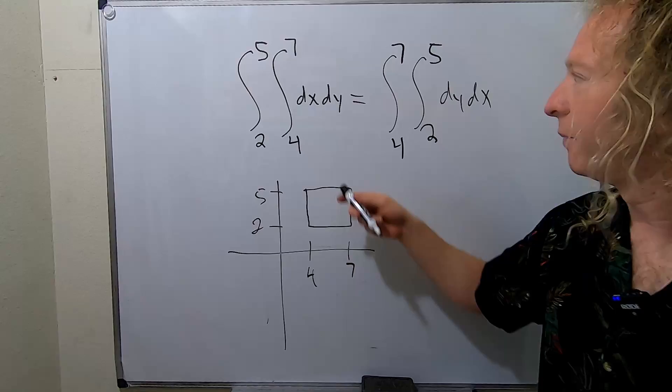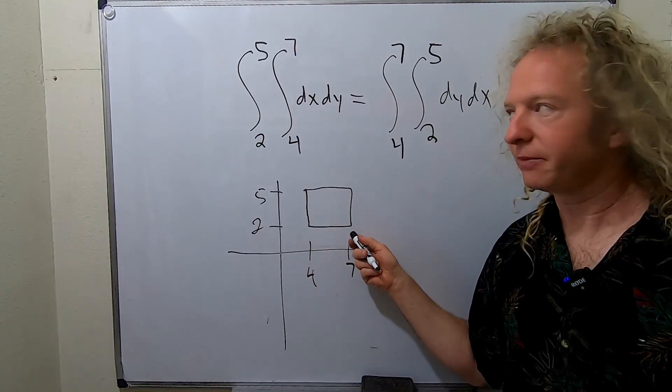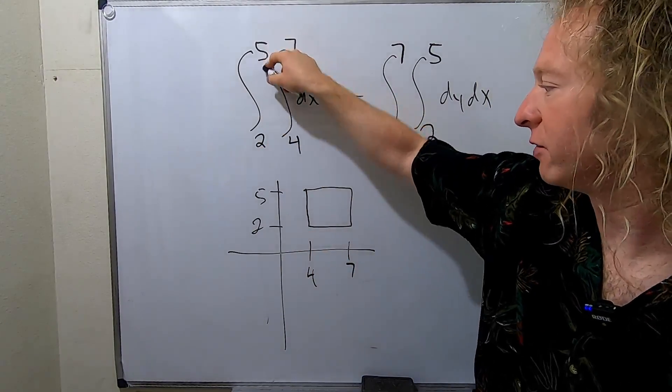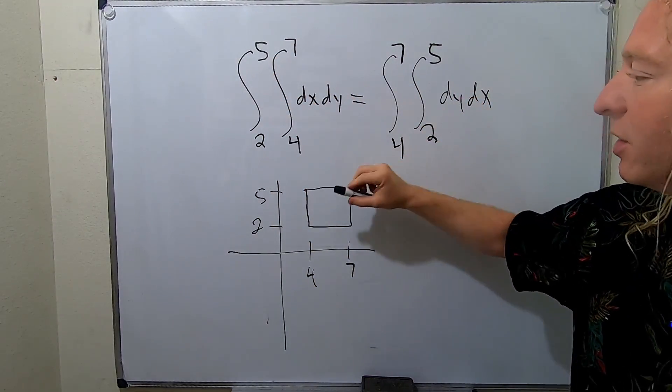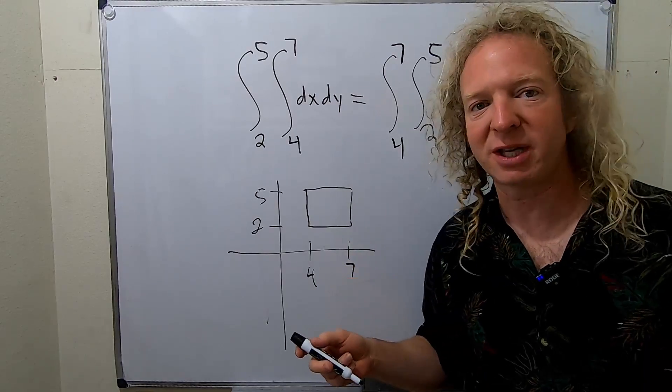So let's just double check. So in this case x goes from 4 to 7, and then y goes from 2 to 5. In this case first you do y, 2 to 5, then you do x, 4 to 7. In both cases you end up with the same thing.